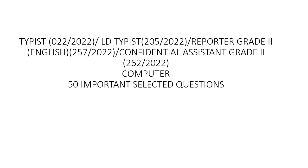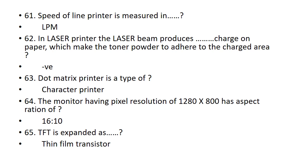The speed of a line printer is measured in LPM. In a laser printer, the laser beam produces a negative charge on paper, which makes the toner powder adhere to the charged area. Dot matrix printer is a type of character printer.